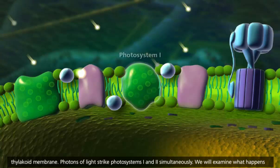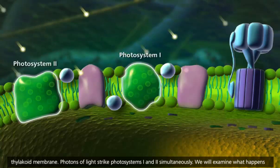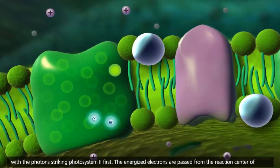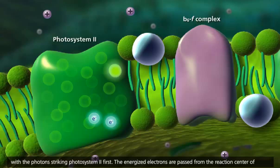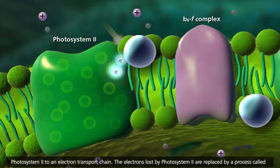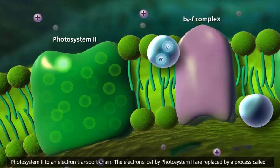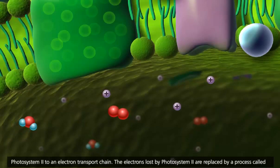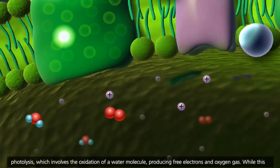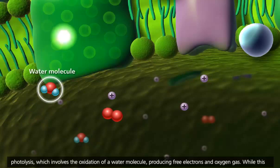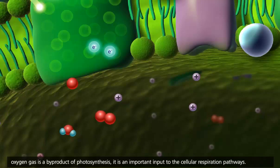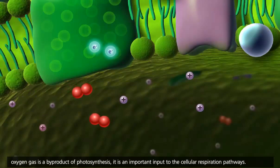Photons of light strike photosystems I and II simultaneously. We will examine what happens with the photons striking photosystem II first. The energized electrons are passed from the reaction center of photosystem II to an electron transport chain. The electrons lost by photosystem II are replaced by a process called photolysis, which involves the oxidation of a water molecule producing free electrons and oxygen gas. While this oxygen gas is a byproduct of photosynthesis, it is an important input to the cellular respiration pathways.